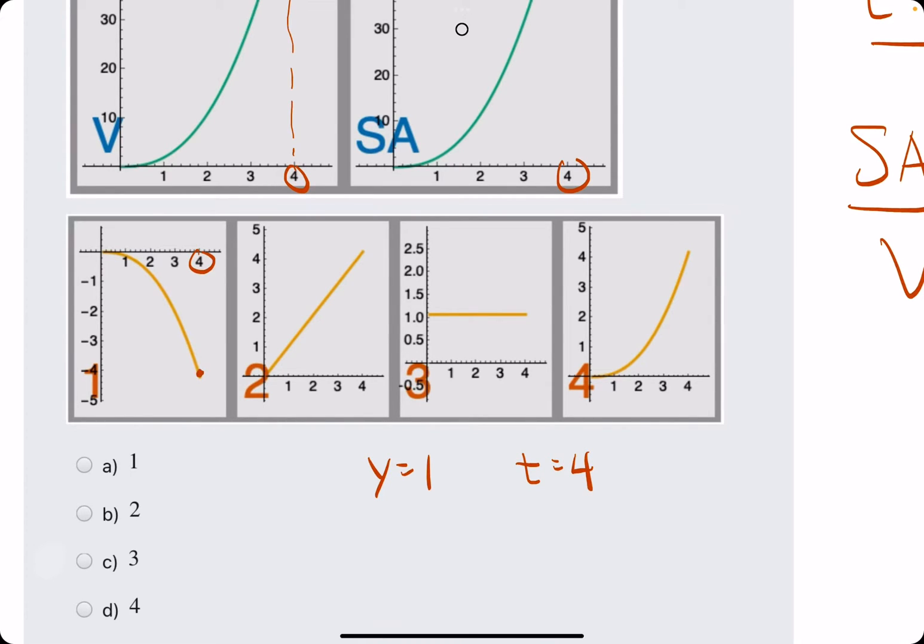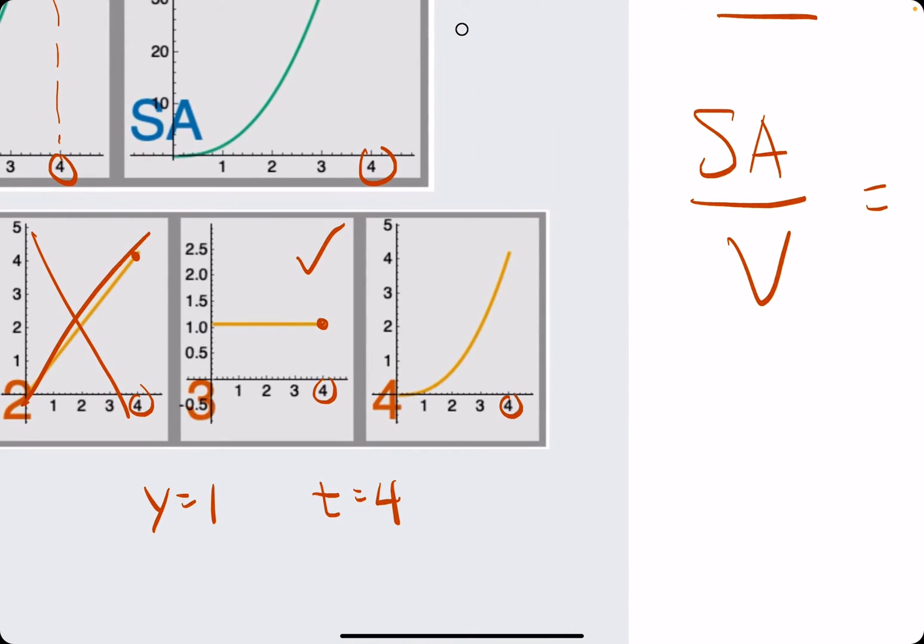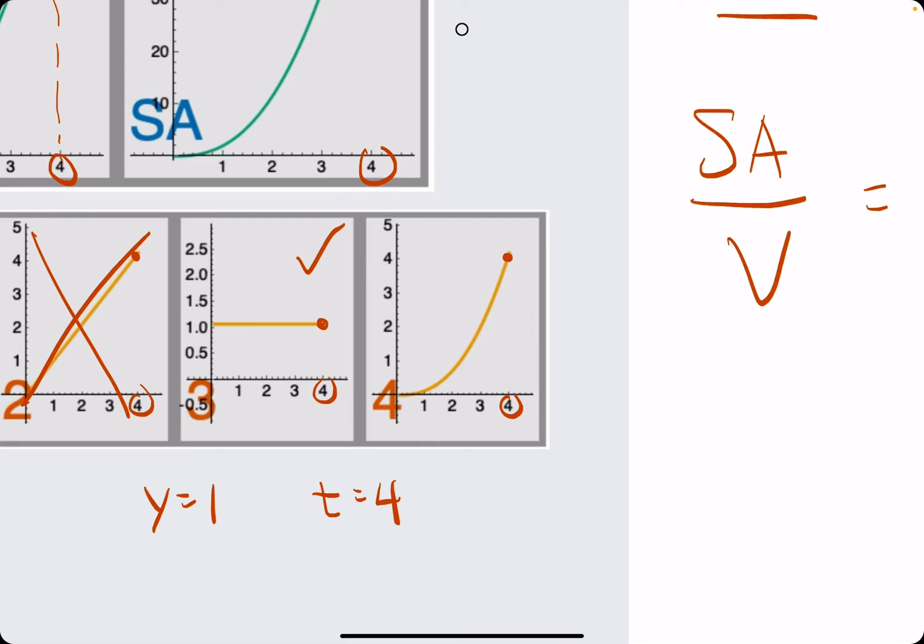So at time 4, this has a y value of negative 4, that can't be it. This has a y value of 4 at 4, that can't be it. This has a y value of 1 at 4, that could be it. And then this has a y value of 4 at time 4, so that can't be it.